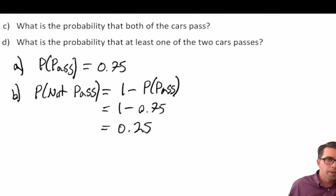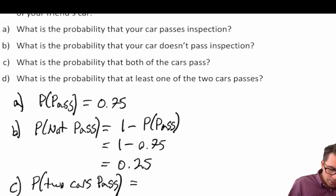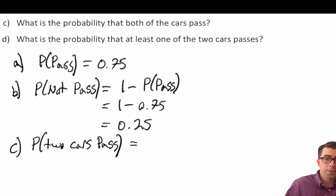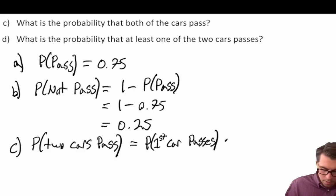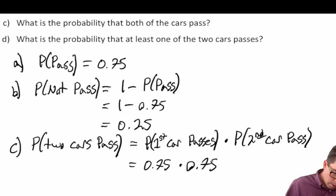For part C, what is the probability that both cars pass? Since cars passing is independent of our friend's car, we use the multiplication rule. We take the probability that the first car passes times the probability that the second car passes, which equals 0.75 times 0.75, or 0.75 to the power of two, which equals 0.5625.